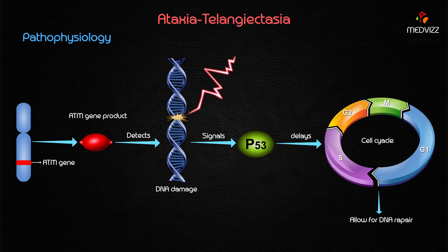The gene product of the ATM gene is mainly involved in sensing DNA that has been damaged by radiation. Once there is radiation-induced DNA damage, this damage is detected by the gene products produced by the ATM gene.